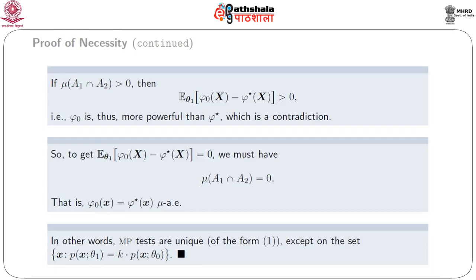In other words, most powerful tests are uniquely determined on the sets for which p(x; theta-1) is greater than k times p(x; theta-naught) or p(x; theta-1) is less than k times p(x; theta-naught), but it remains undetermined on the set where p(x; theta-1) equals k times p(x; theta-naught), and that gives the proof of the necessary part of the lemma.